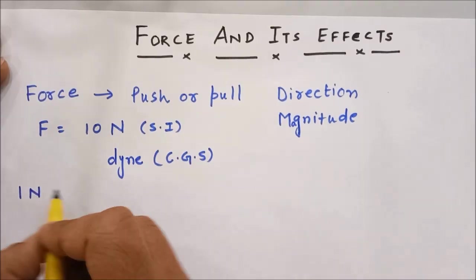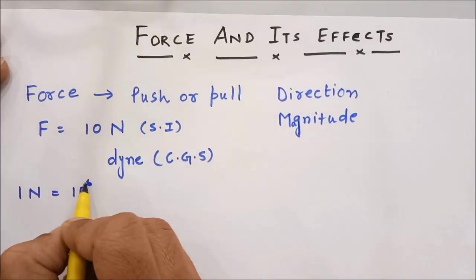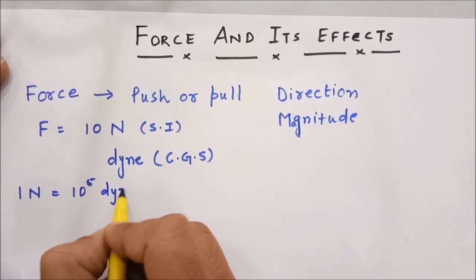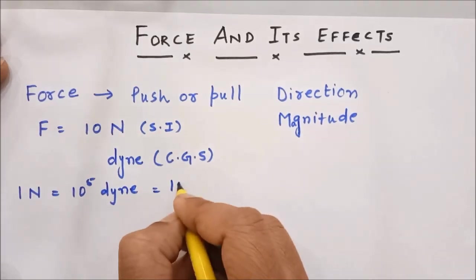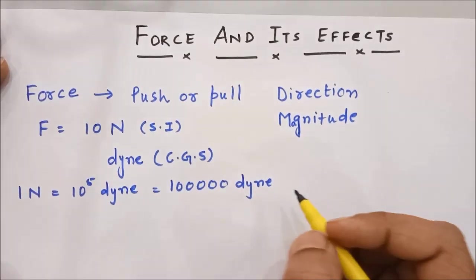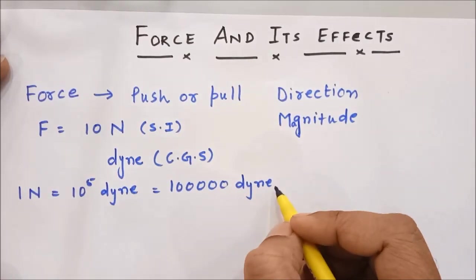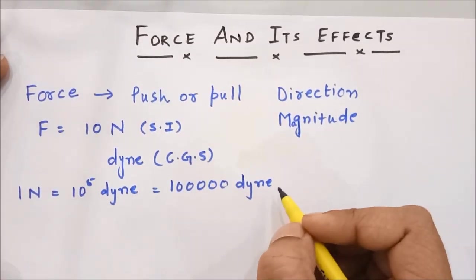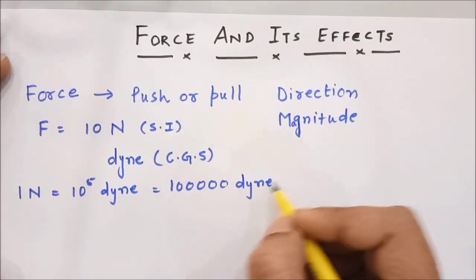1 Newton is equal to 10 to the power 5 dyne. That means dyne. Make sure you do not write down dynes because plural is not allowed in writing the units.